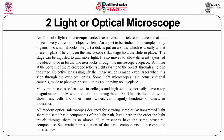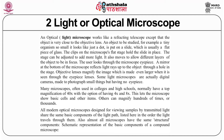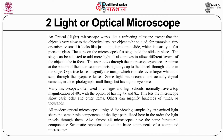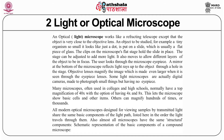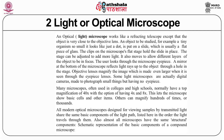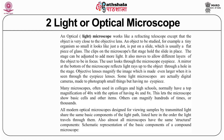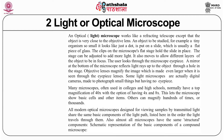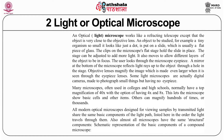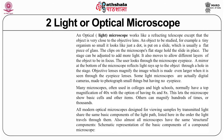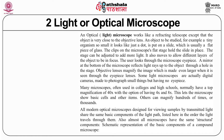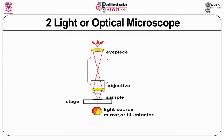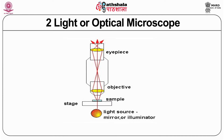Many microscopes used in colleges and high schools have only a top magnification up to 40x, and sometimes also lower magnification of 4x and 8x. Others can magnify 100 times or 1000 times — for example, in an electron microscope you can go into higher resolution. All modern optical microscopes are designed to view samples by transmitted light and share basic components, which are shown in the coming schematic diagram of a compound microscope.